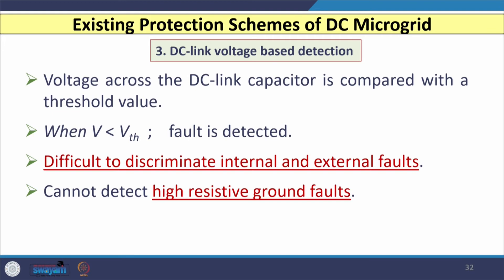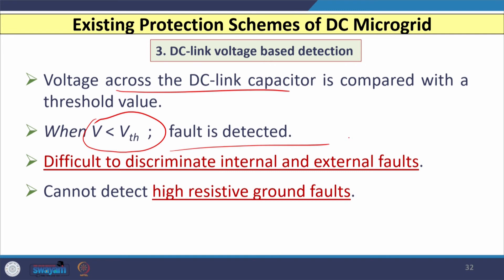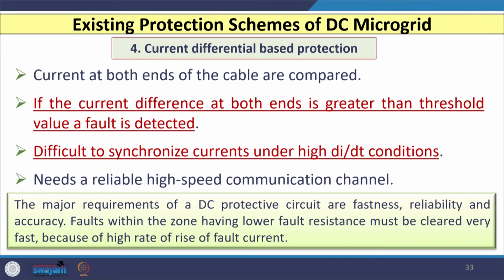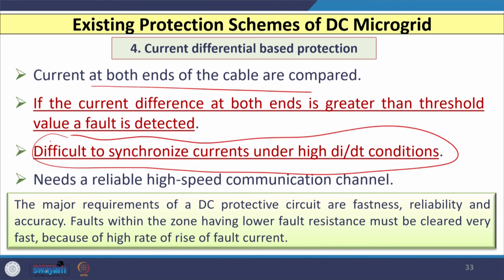The third scheme is the DC link voltage-based detection scheme, where the voltage across the DC link capacitor is compared with a threshold Vth. When V < Vth, a fault is detected; otherwise it is a normal or external condition. However, it is difficult to discriminate between internal and external faults and this scheme also faces difficulty detecting high-resistance ground faults. The fourth scheme is current differential protection, where currents at both ends of the cable are compared using remote and local end data. If the current difference exceeds a threshold, the fault is detected. However, synchronizing currents under high di/dt conditions is difficult and a high-speed communication channel is required.